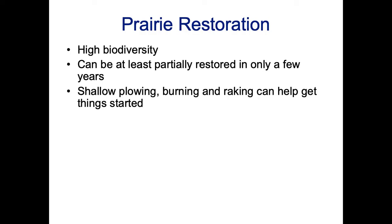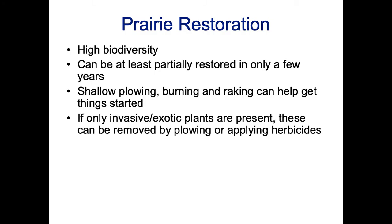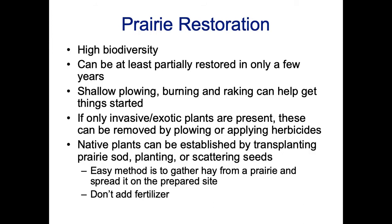For prairie restoration, shallow plowing, burning, and raking can help kick start the restoration process. If only invasive or exotic plants are present, they can be removed by plowing or applying herbicides and starting from scratch. Native plants can be established by transplanting prairie sod, planting, or scattering seeds.